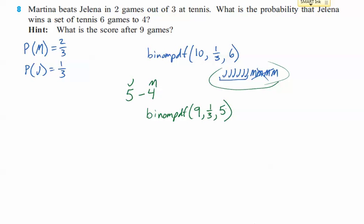Those five wins can happen in whatever order that needs to happen. She can win the first five and then lose the next four. She could win one and then lose four and then win the other four. Any order is fine as long as they get to this point. That's what the binomial PDF will do. It will tell you, no matter what order they occur in, we're going to win five games for Jelena.